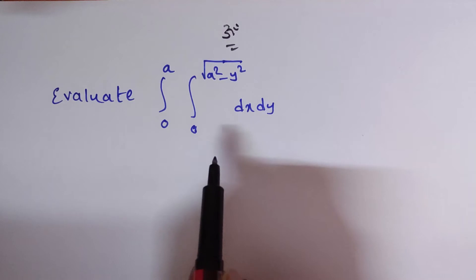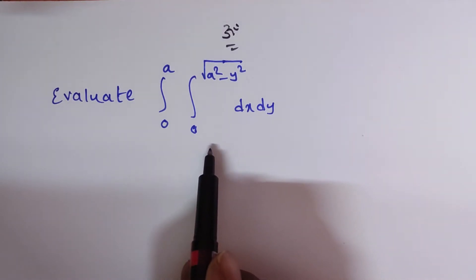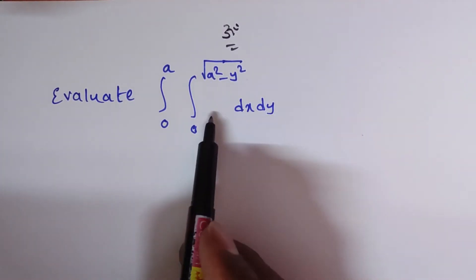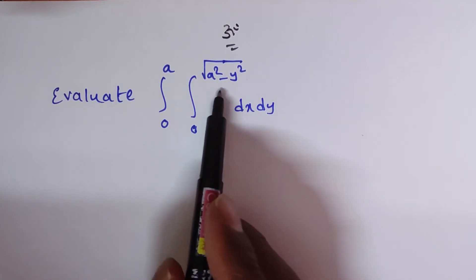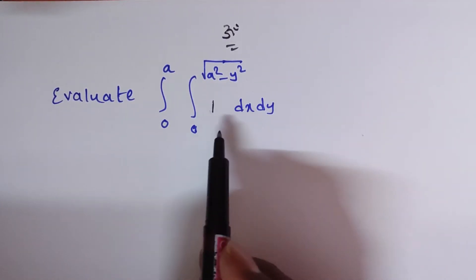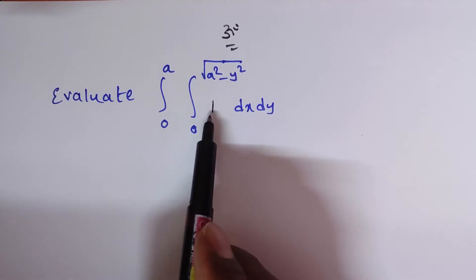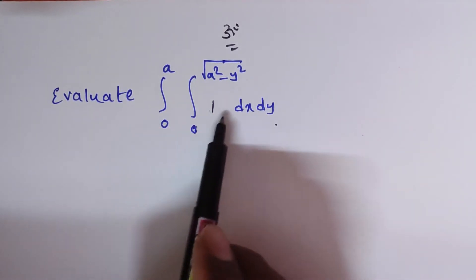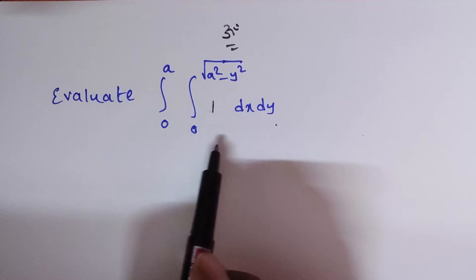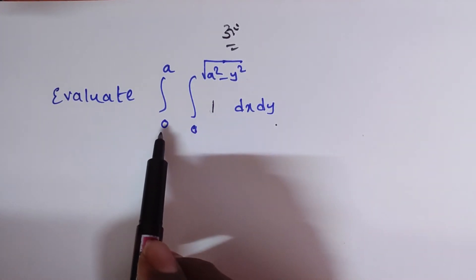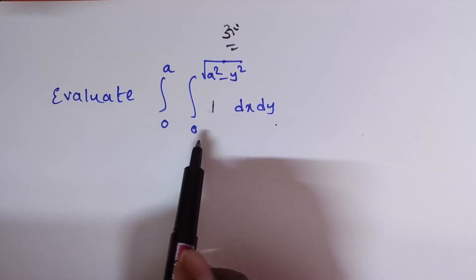Here you observe we are doing double integration with respect to x and y variables. The integrand is not explicitly given, so the integrand is simply 1. We are integrating this 1 with respect to x and y, and limits are given, so it is a definite integration. While doing definite integrals you have to know which limit belongs to x and which limit belongs to y.